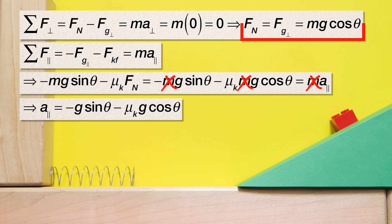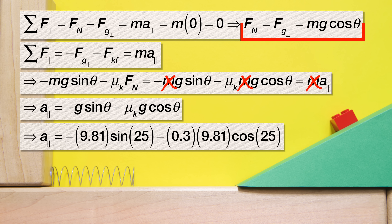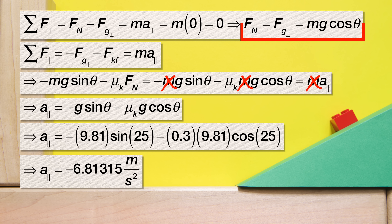With numbers, that is the negative of 9.81 times the sine of 25 minus 0.3 times 9.81 times the cosine of 25, which works out to be negative 6.81315 meters per second squared.